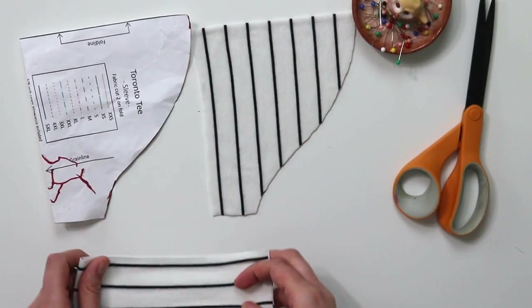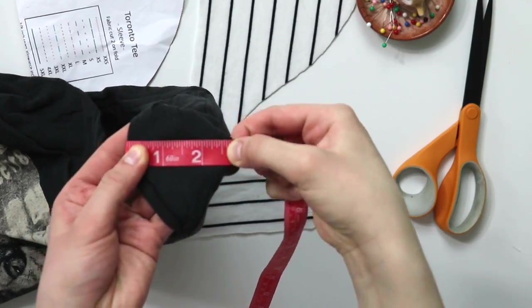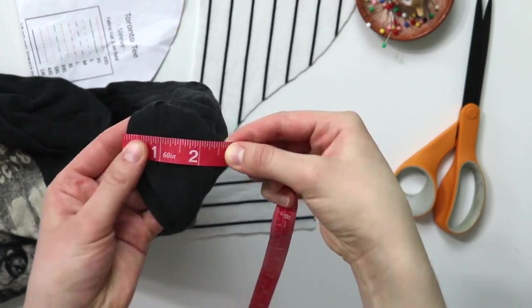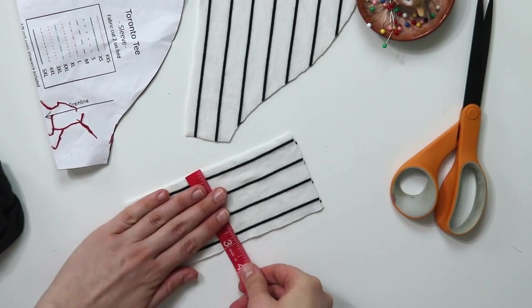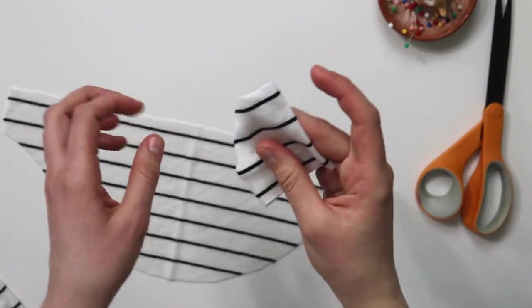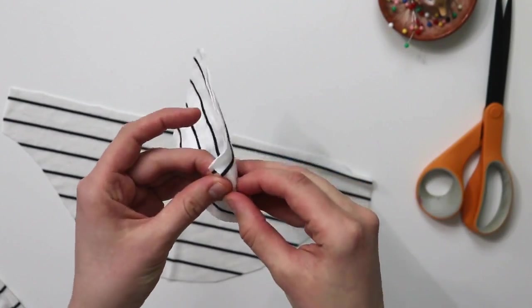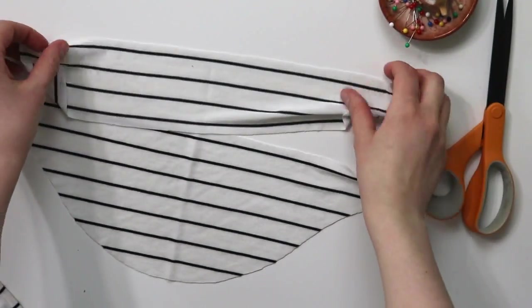Now it is time to cut your cuff. This ready-to-wear cuff is about two and a half inches folded, which makes it about six inches unfolded including the seam allowance. Mine is about three inches unfolded, which will make it about an inch and a half folded in. You can make yours as wide as you want.